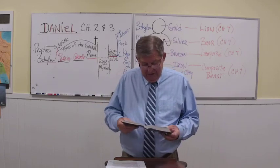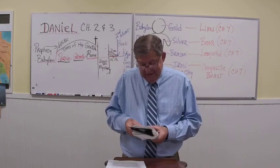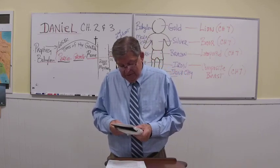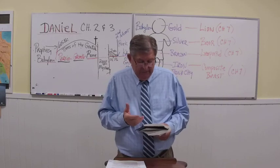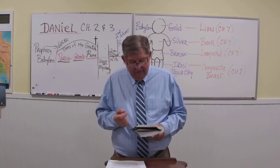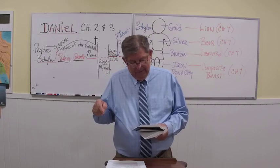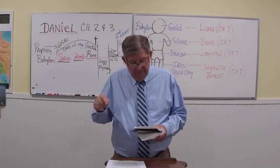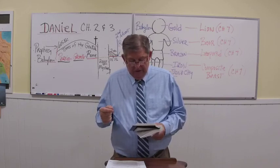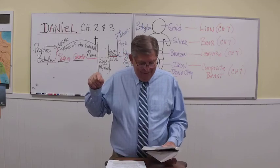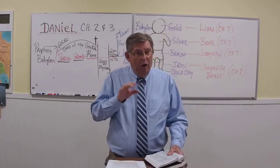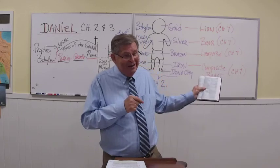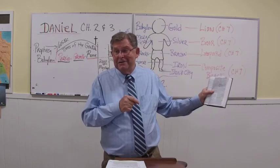In chapter 2, verses 28 and 29, Daniel says: 'However, there is a God in heaven who reveals mysteries and he has made known to King Nebuchadnezzar what would take place in the latter days.' So what we're talking about — there's no question — we're talking about what's going to happen in the latter days. These kingdoms are going to come and go, but the main focus of Daniel is what's happening in the latter days.